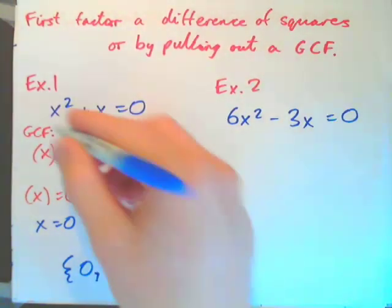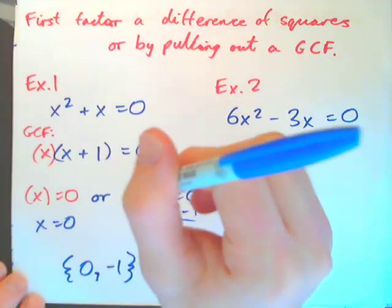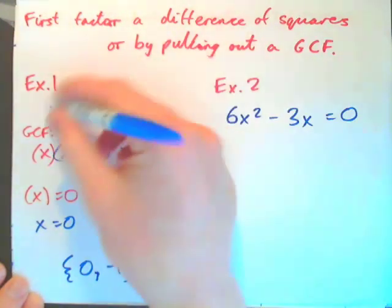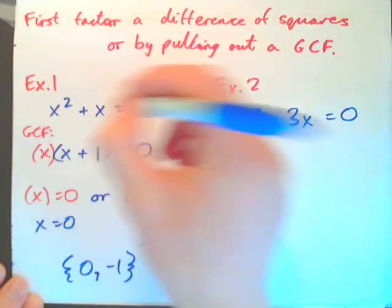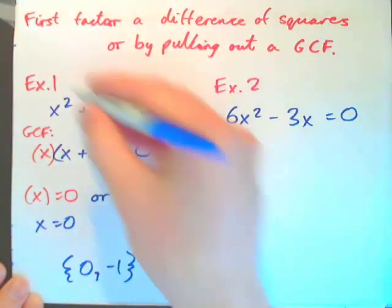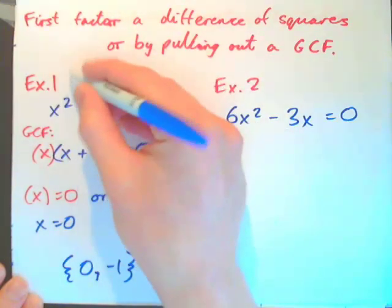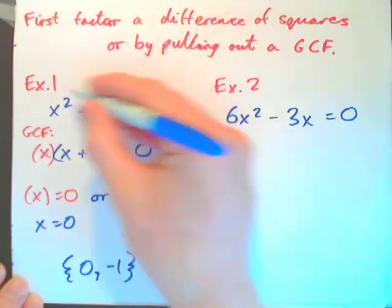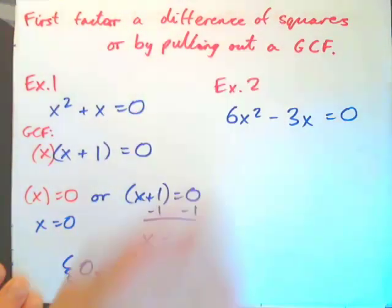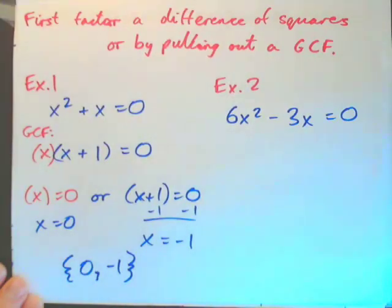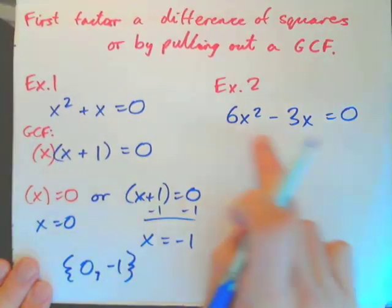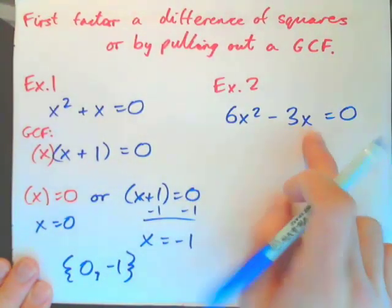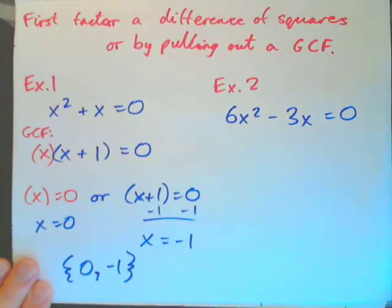And if you check it, you'll see that it works. If I plug 0 in for x, the whole thing becomes 0. If I plug negative 1 in, this becomes positive 1, this becomes negative 1, and 1 minus 1 is 0. Now press pause on the video and solve this one: 6x squared minus 3x equals 0.